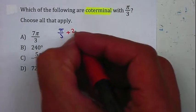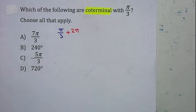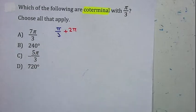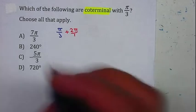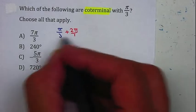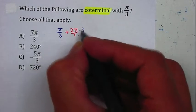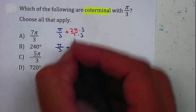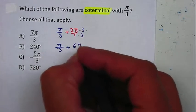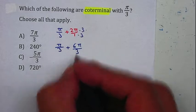So therefore, we need to add 2π. I can add the fractions. I need to have the same denominators when I add two fractions, so I'll multiply by 3. That gives me π over 3 plus 6π over 3.